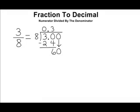8 can be divided into 60 a total of 7 times. Because 7 times 8 is 56 that is as close to 60 as we can get. And the difference between 60 and 56 is 4. We proceed to add another 0 in the thousandths place and drop that straight down to get the number 40.